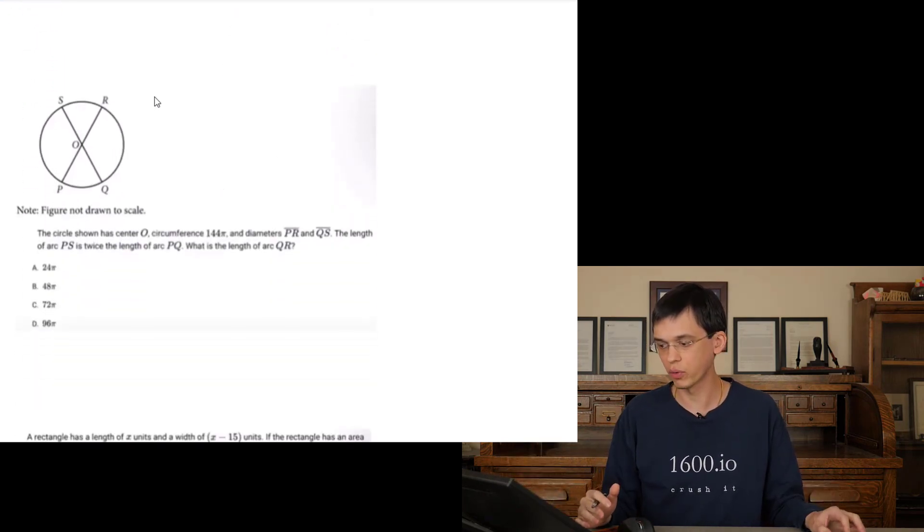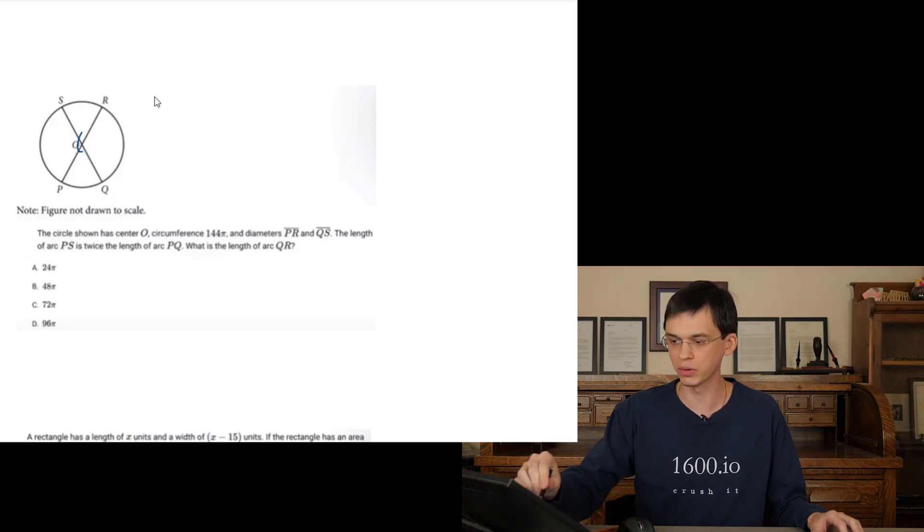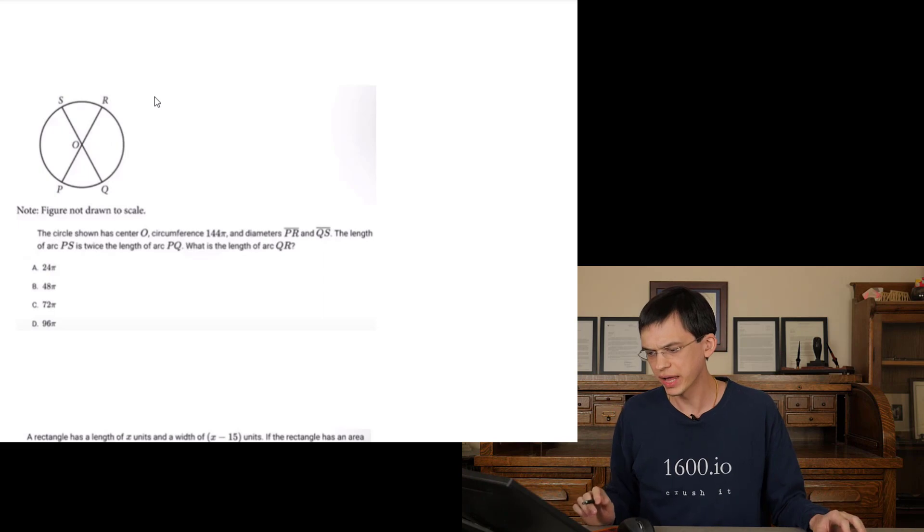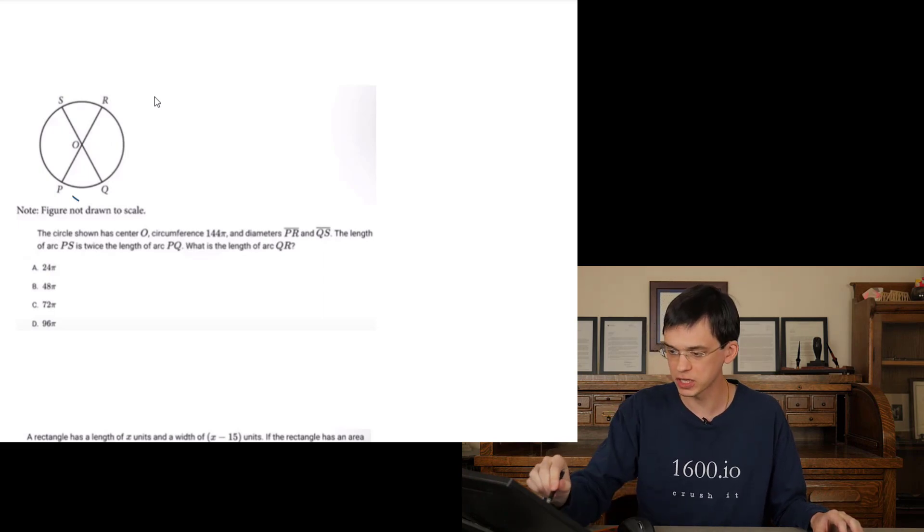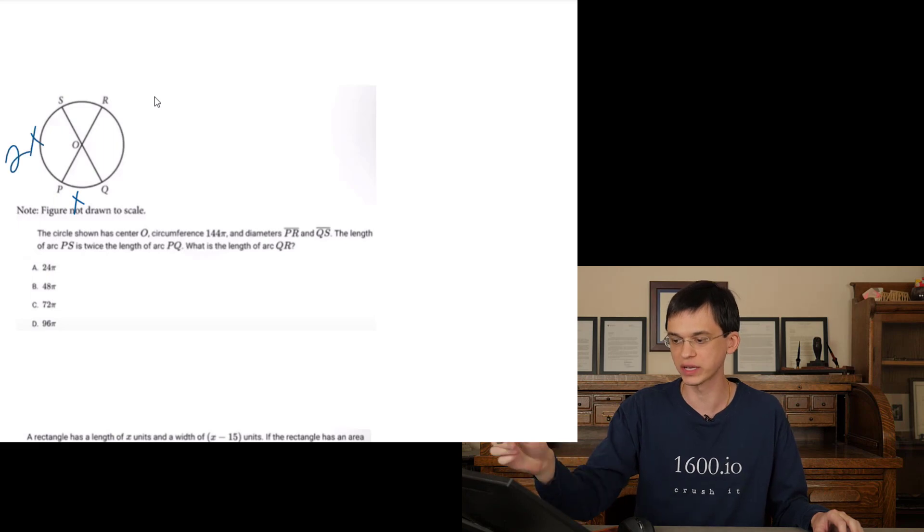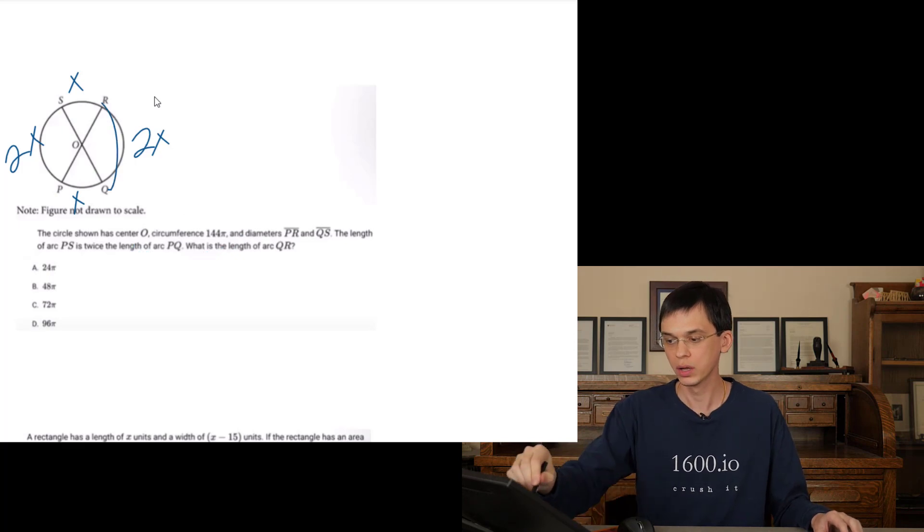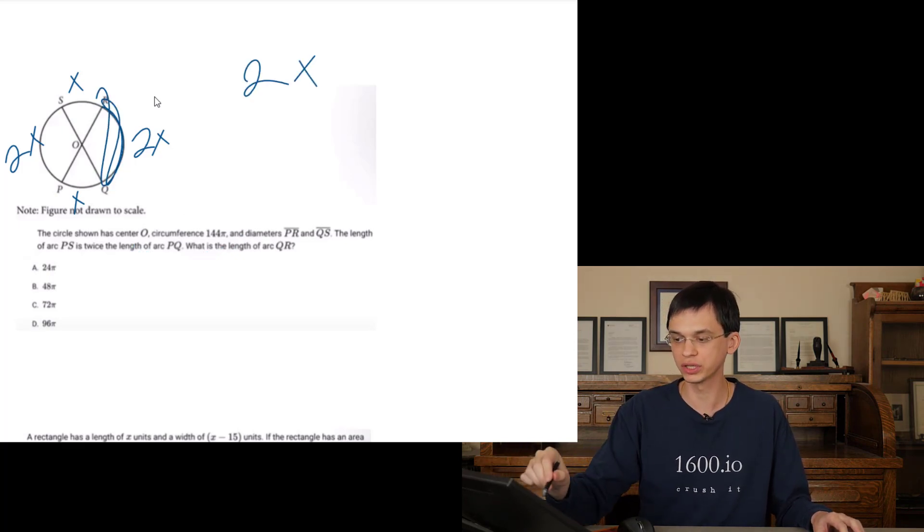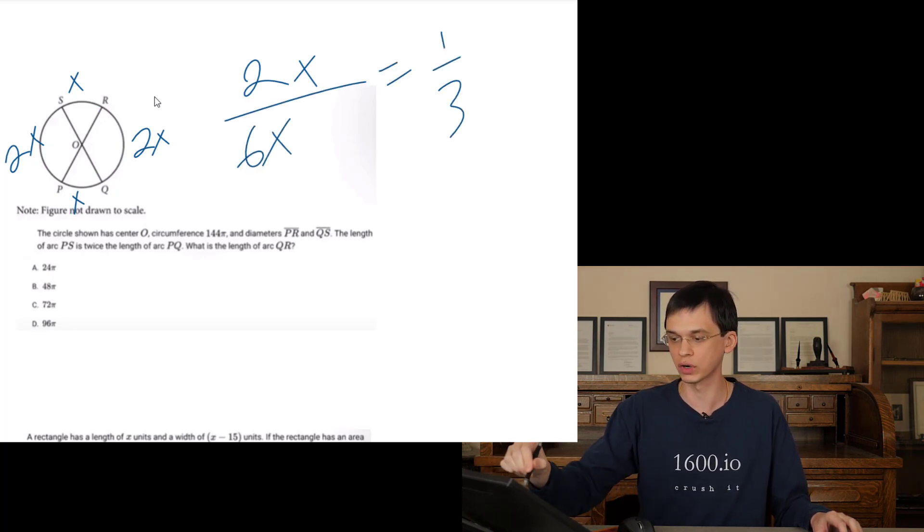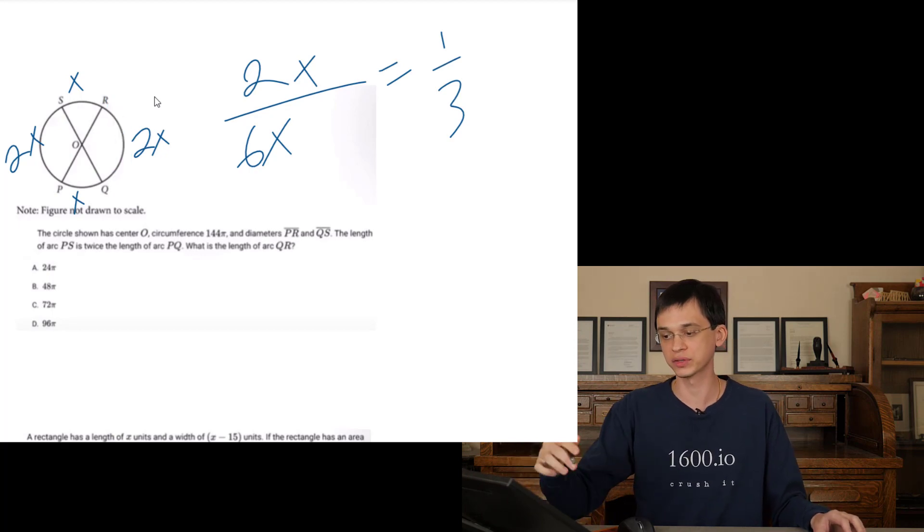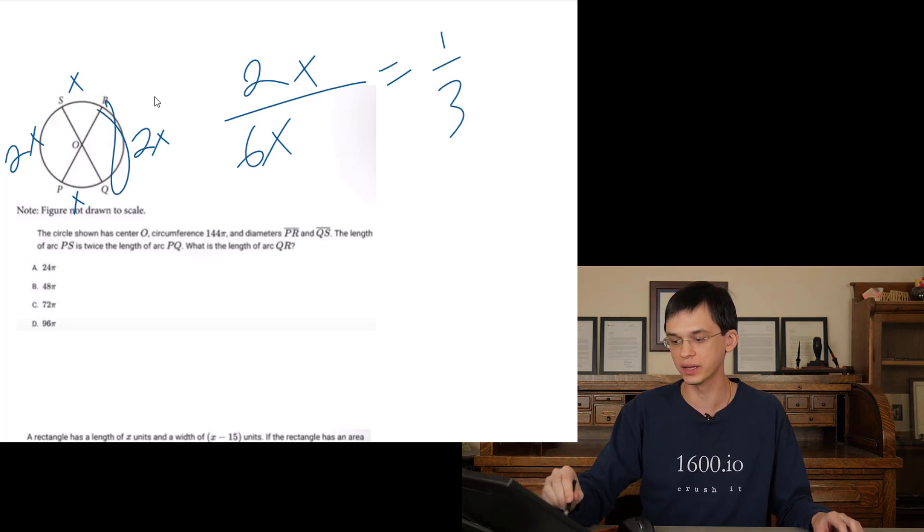Circle shown. Center O. Circle is 144. Diameter PR and QS. So we know O is the center. We know these are all radii. The length of arc PS is twice the length of arc PQ. So that means that if PQ is X, PS is going to be 2X because it's twice the length. And because we know that these are all vertical, we know that SR is going to be X and we know that RQ is going to be 2X proportionally. So what's the length of arc QR if they tell us the whole circumference is 144? Well, 2X is going to be the proportion of QR out of the total of the circles X plus 2X plus X plus 2X is 6X. So that means that one third of the circle is QR. So one third of the circumference, therefore, is going to be QR. One third of 144 is going to be 48 pi.